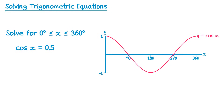The questions we've looked at so far will be on the calculator paper. However, you could be given questions like this on the non-calculator paper too, testing your knowledge of exact values of trig functions. For this one, we start by doing x equals inverse cos of 0.5, but you should already know that inverse cos of 0.5 is 60 degrees, since cos of 60 equals one half.